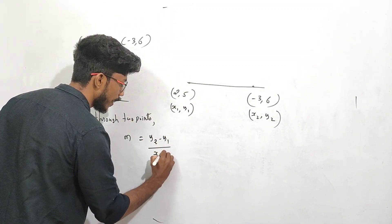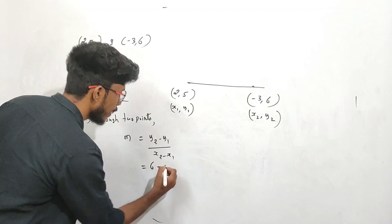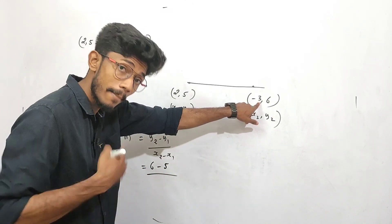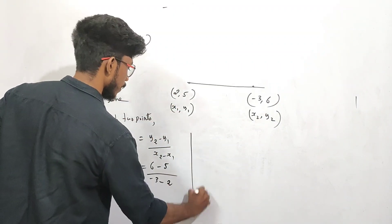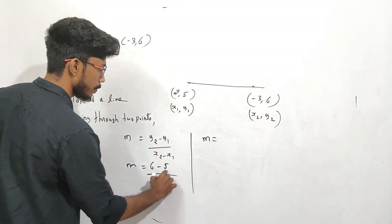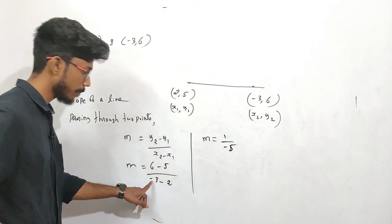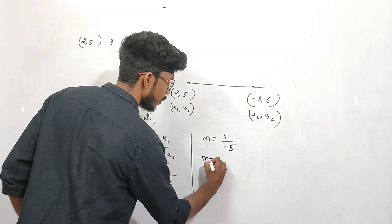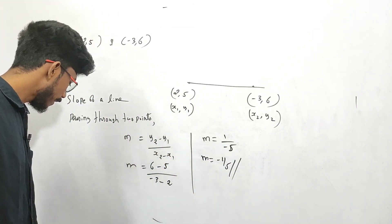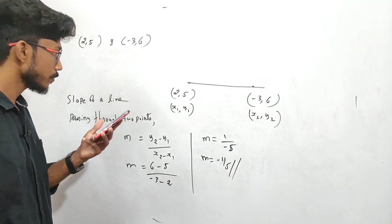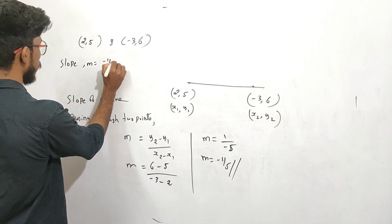The formula is m = (y2 - y1) / (x2 - x1). So the slope is: m = (6 - 5) / (-3 - 2) = 1 / (-5). That gives us m = -1/5, which is the required slope.